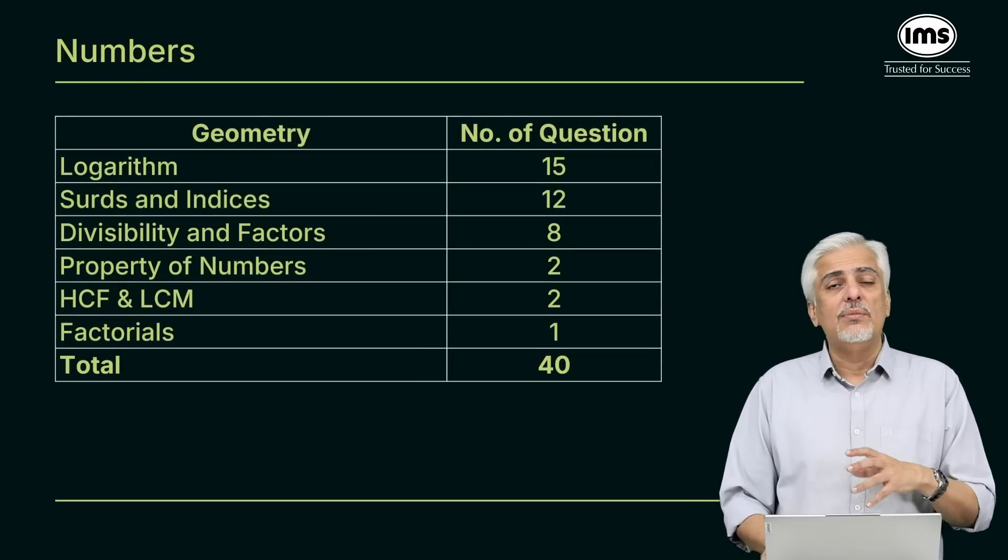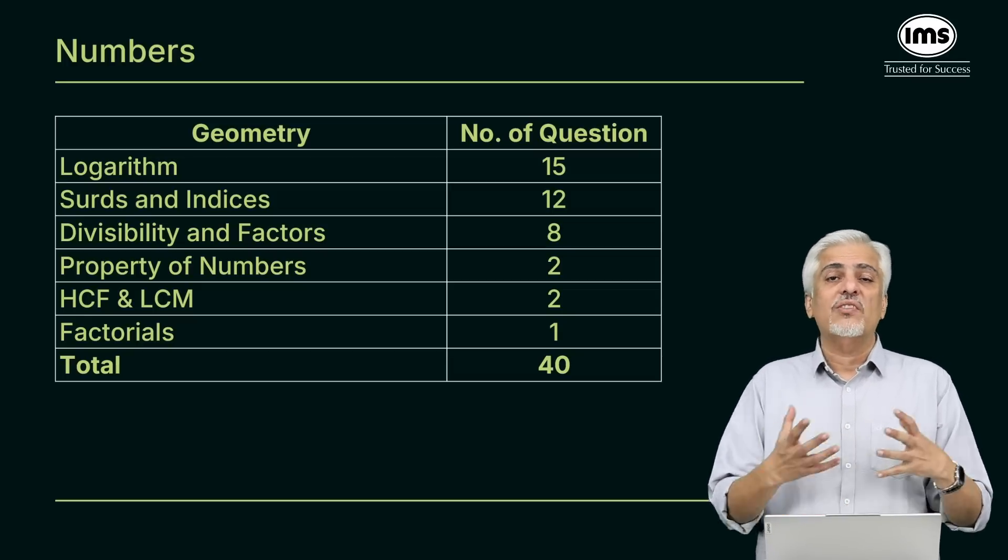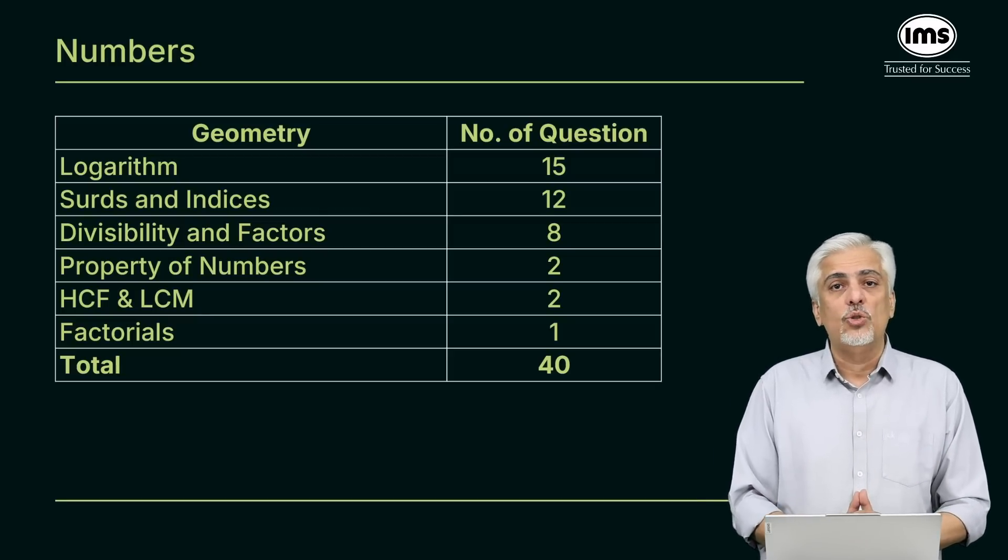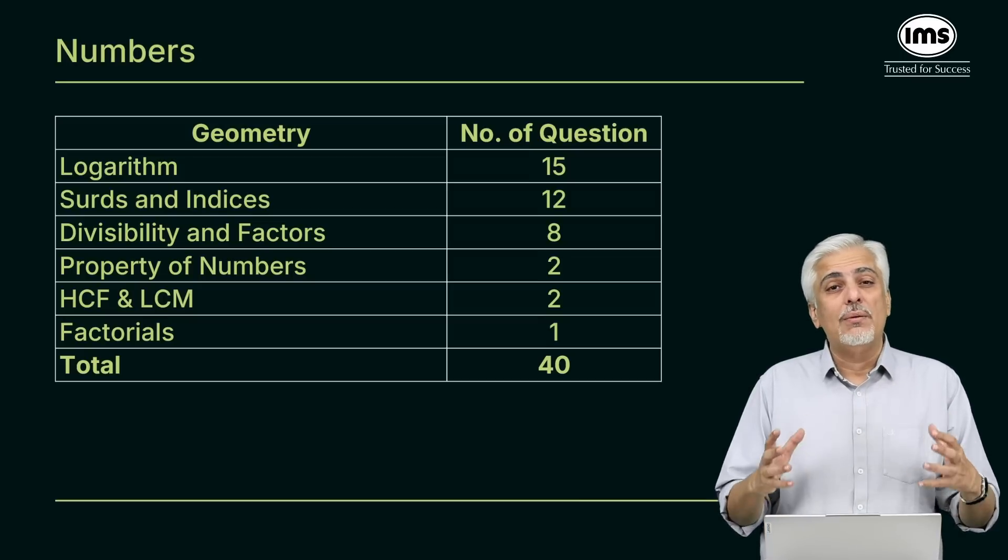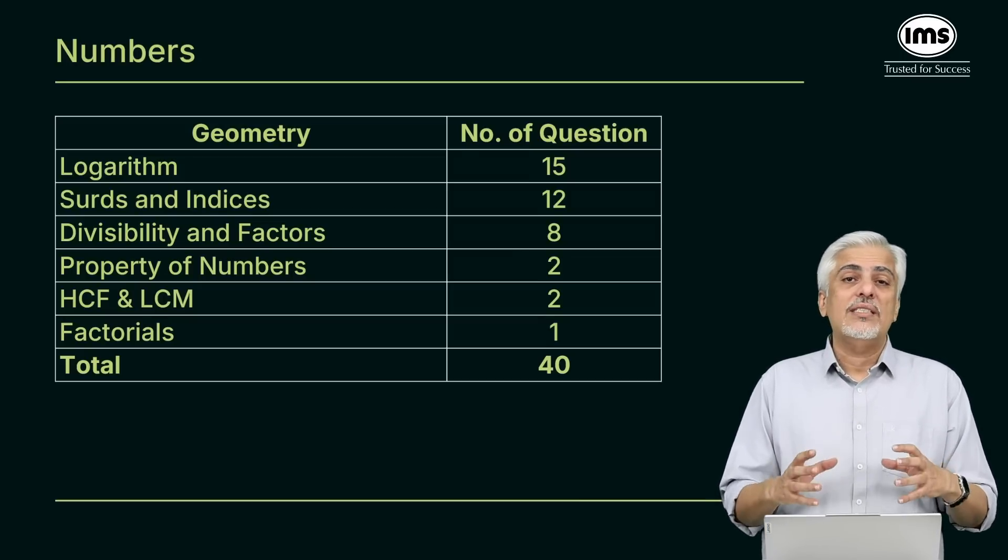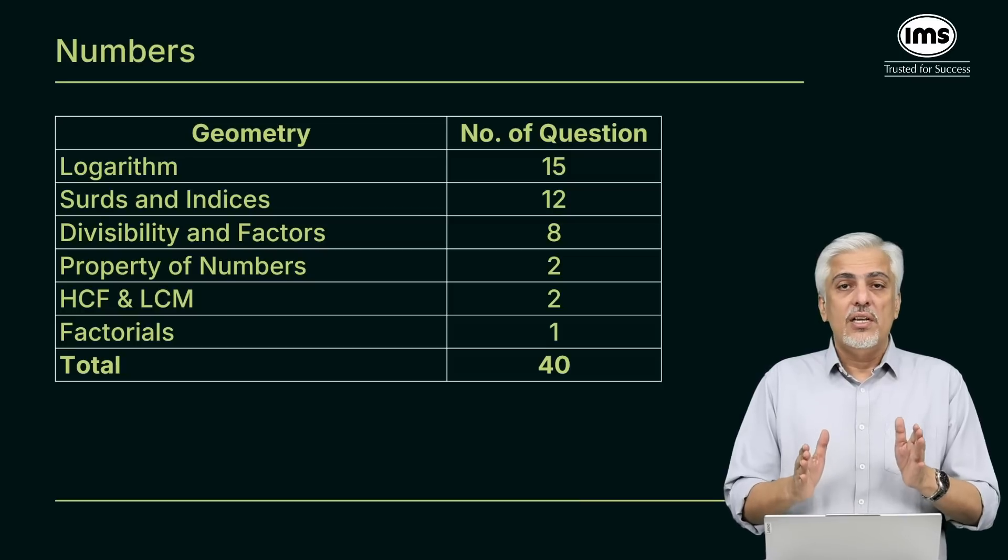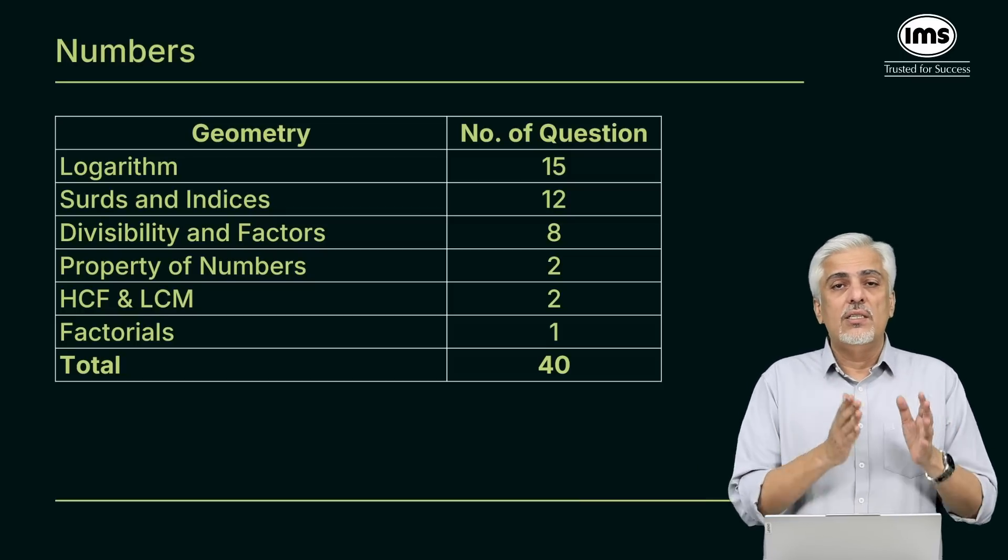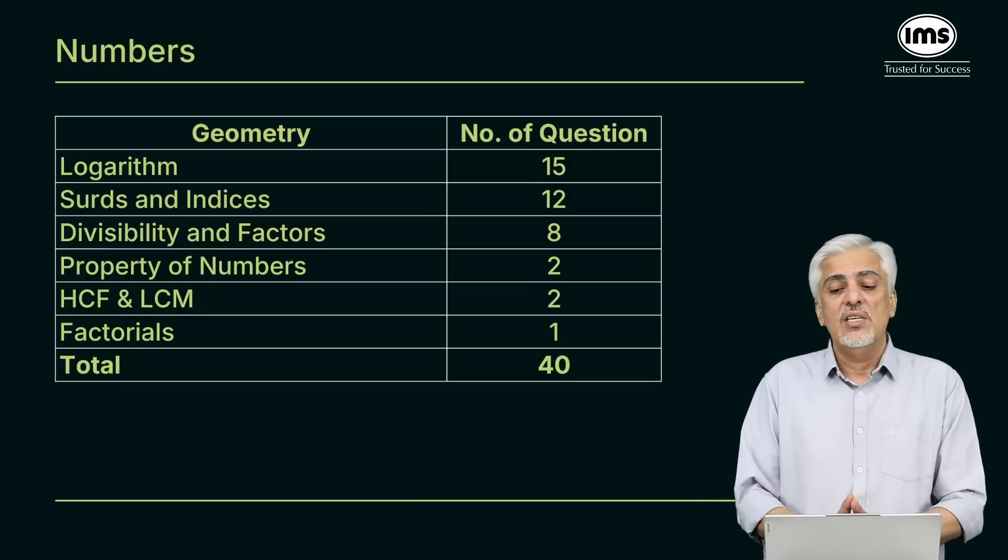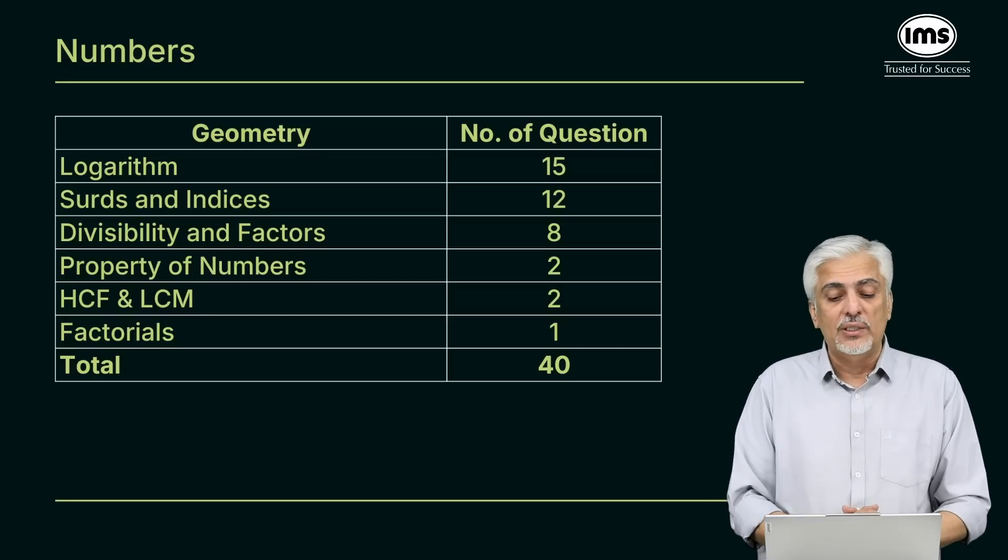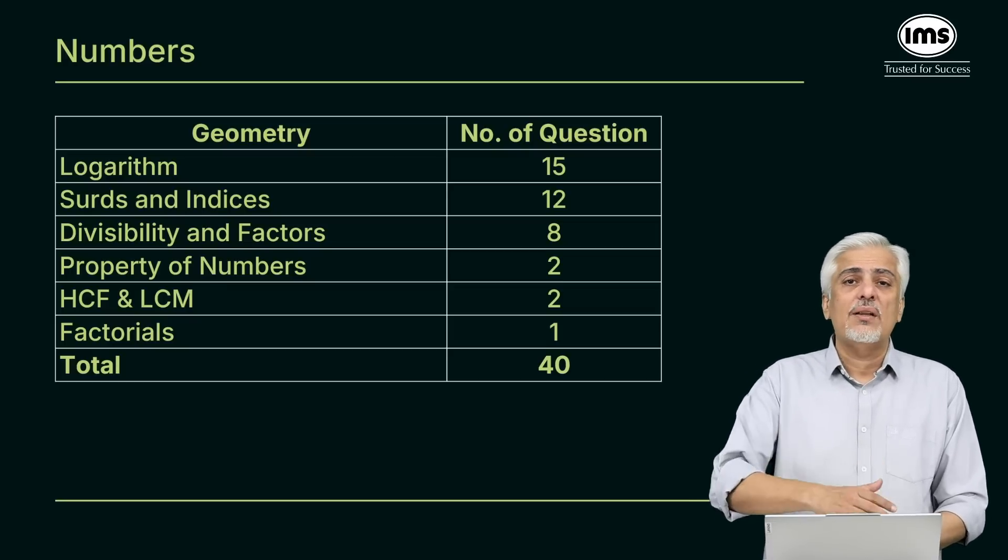Numbers. Even if you don't want to do the whole numbers, my point is you cannot escape factors. You need to know property of factors really well because based on factors, a lot of other questions can get solved. There's no choice over there. If you notice logs, surds and indices itself is 27 questions. I've been harping about logs, keep doing logs well because logs, surds and indices by itself, I would say even if you start from scratch, it is not more than a two-day revision to know everything about these topics. Indices, surds and logs if done together is not more than two days work and a good 27 questions, which is not a bad weightage out of the 40 questions of numbers. Yes, you need to know basics of HCF-LCM because that can be used in other topics also.